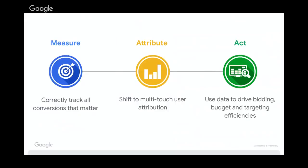Our deep dive into full funnel measurement will be split into three main sections. We're going to discuss Measure — what to measure and how to measure it — then Attribute — how we decide how we value this data — and then Act, which is probably the most important aspect, because it decides what we do with this full funnel data and how we make the most of it.